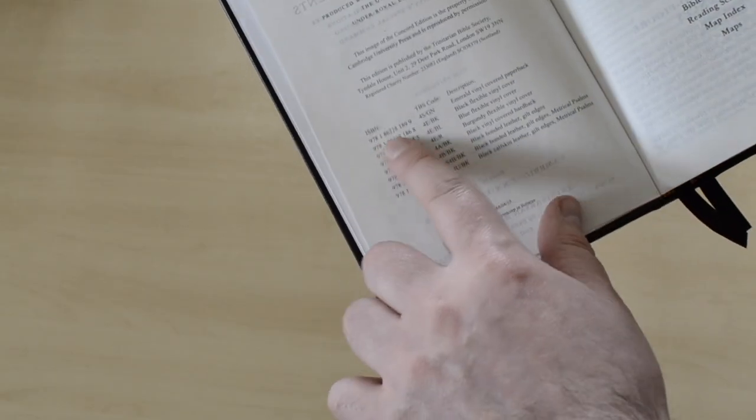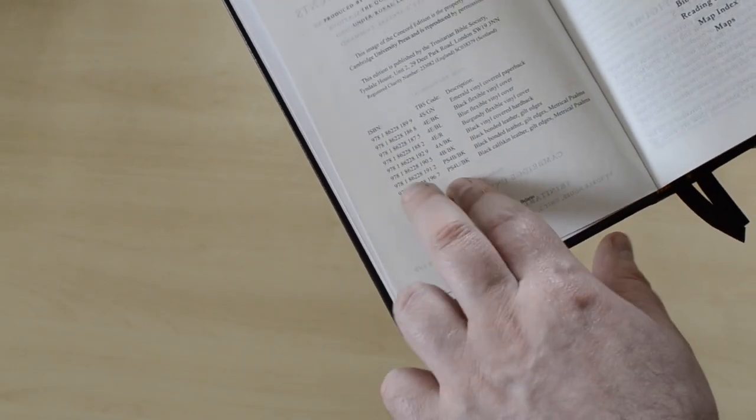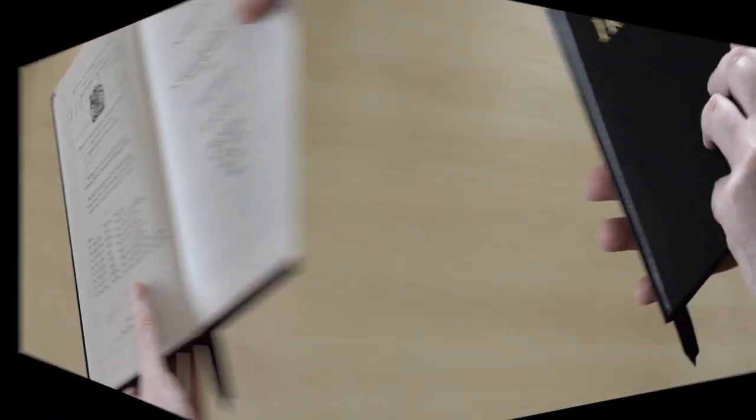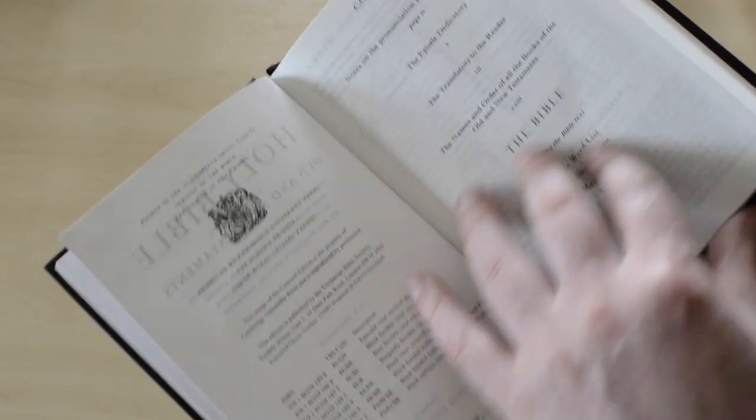Now, as you can see here, the ISBN tells us that you can get this Bible in different covers. So, let's see the contents.